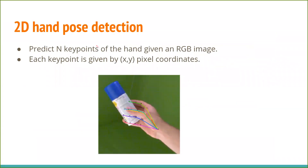For a brief introduction about the task, 2D hand pose detection involves predicting n key points of the hand given an RGB image. n is usually 20, corresponding to the number of joints in the hand, and each key point is given by x, y pixel coordinates.